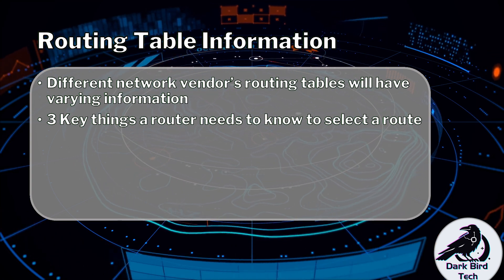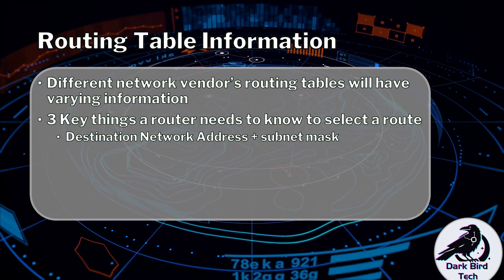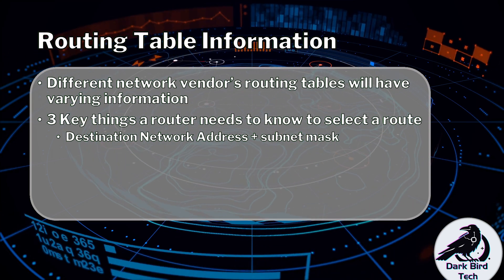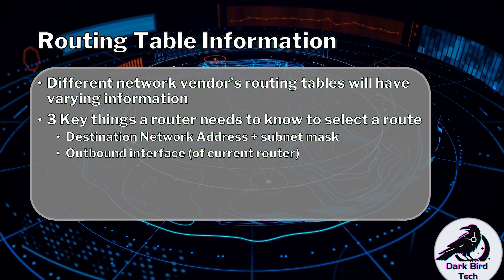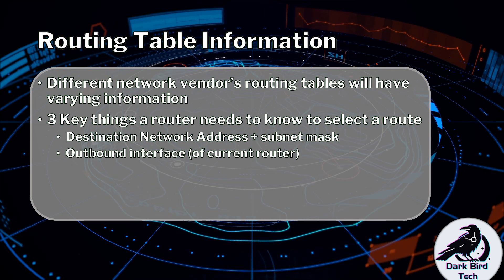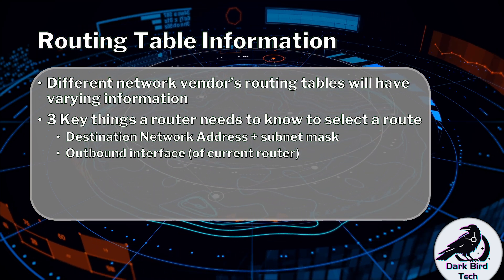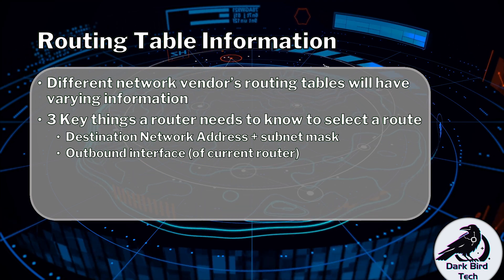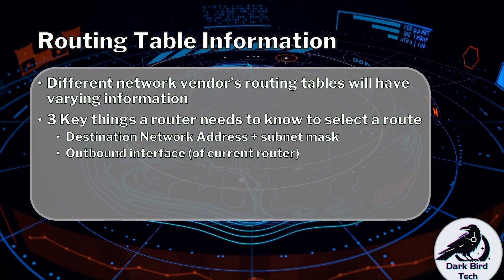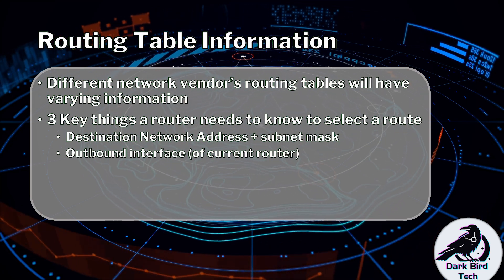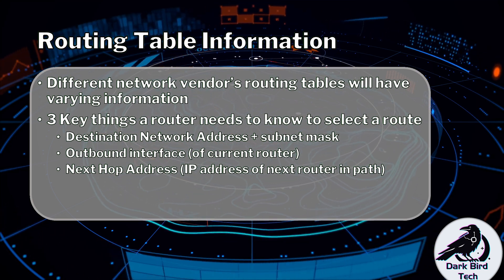The first and most obvious element is the destination network address and, preferably, the subnet mask so that the router can cope with IP subnets that have been subnetted. The router will also need to keep track of the outbound interface — which interface it's sending traffic out of. And then it will also want to keep track of the next hop, or the next router's IP address.